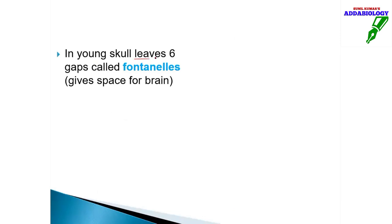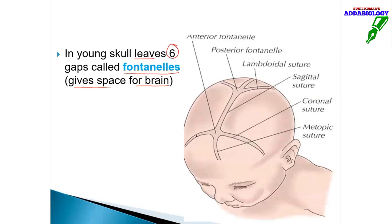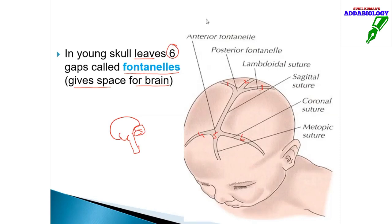In a young skull, sutures leave six gaps — a very important exam question. These six gaps are called fontanels, and they give space for the brain to grow. There are six fontanels: anterior fontanel, posterior fontanel, and others. They allow the brain to grow in size. If a fontanel is not filled by age two, it will definitely be filled by age three.